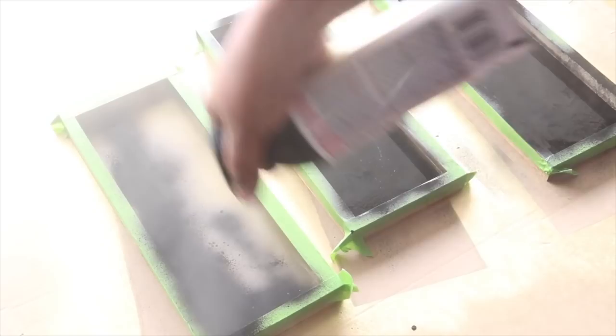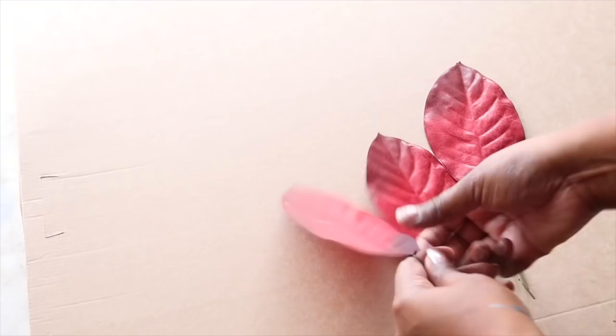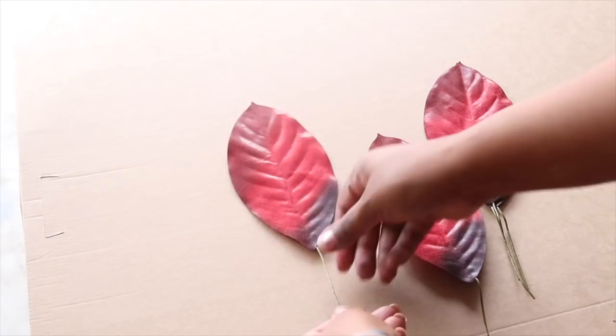I found these magnolia leaves that I thought would be great for this project. So what I'm going to do is just straighten them out and then spray paint them with a gold metallic spray paint.